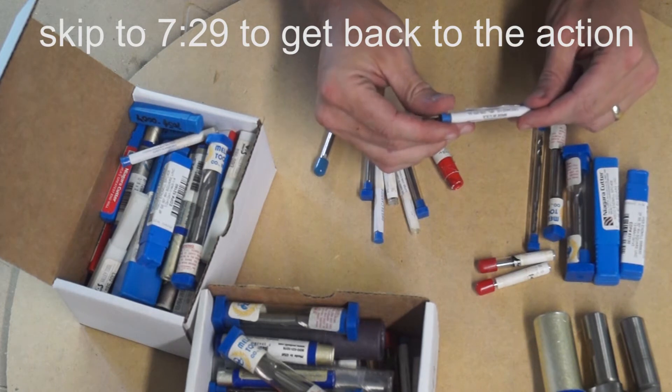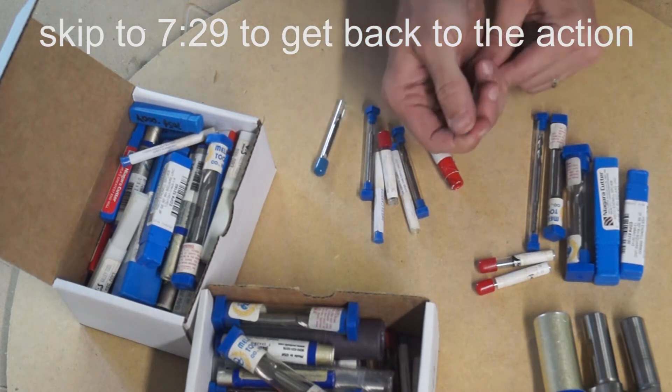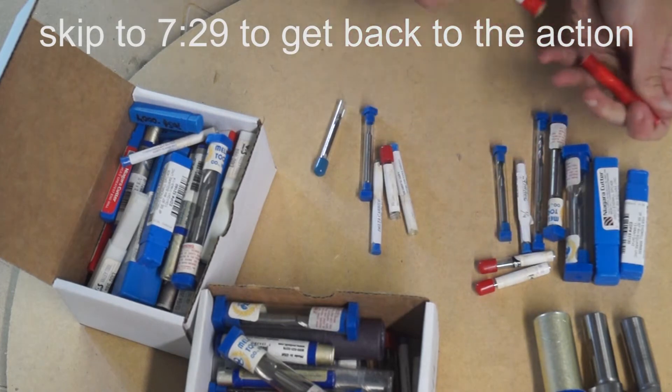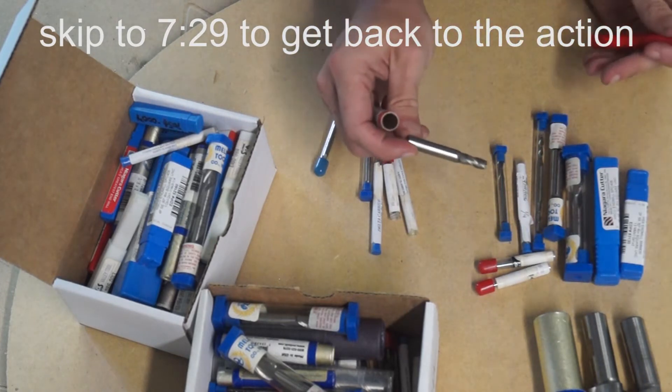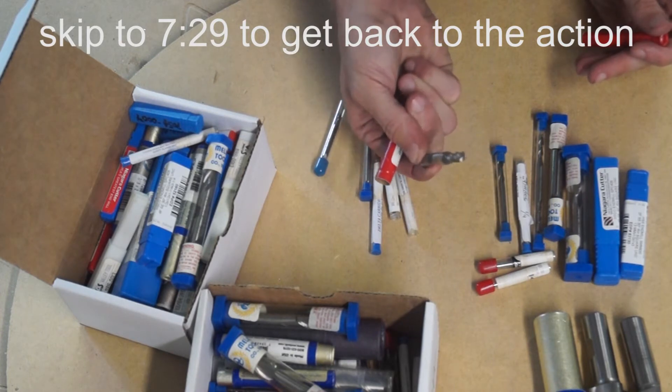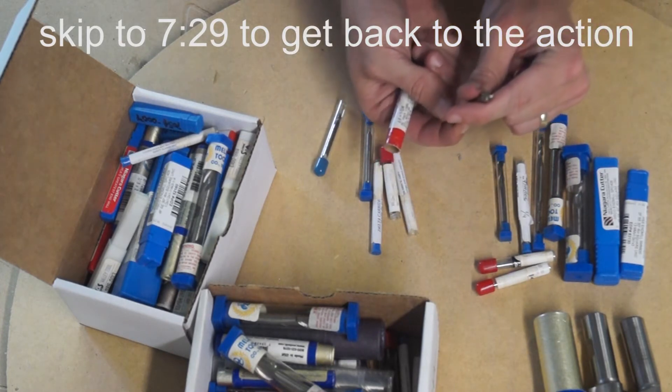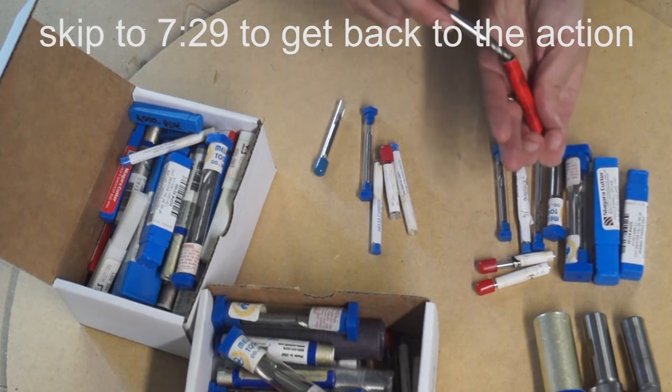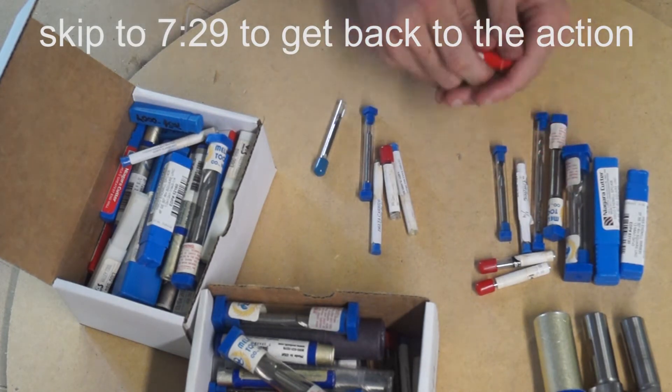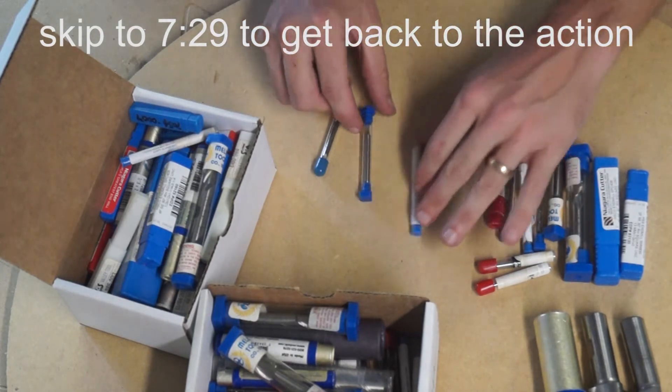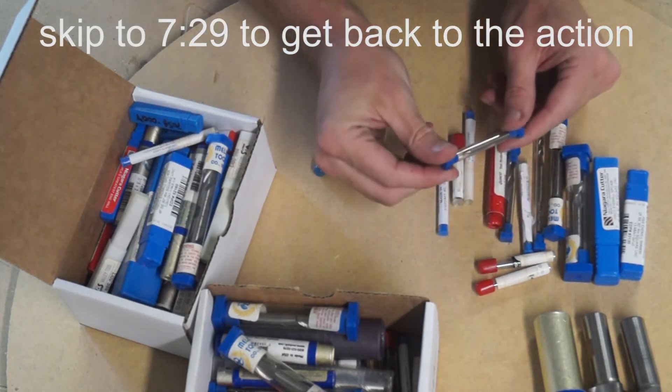We got some carbide, quarter inch carbide. If you're not into machining this is probably really boring stuff. Here's some four flute end mills and they still look sharp. That's the important thing, they don't look like they've had heat damage, they look sharp.